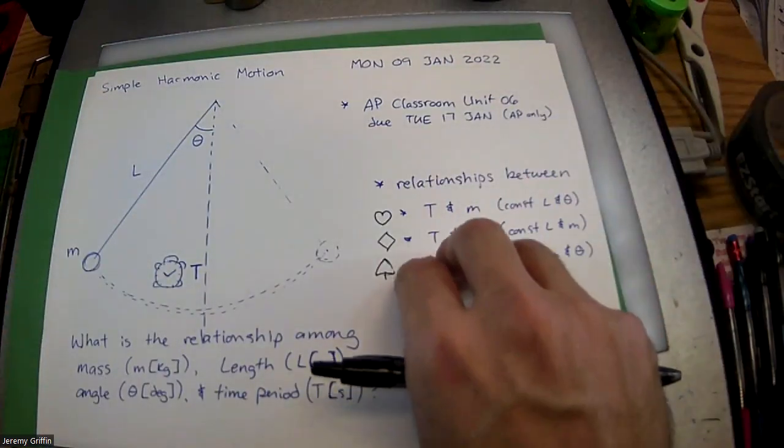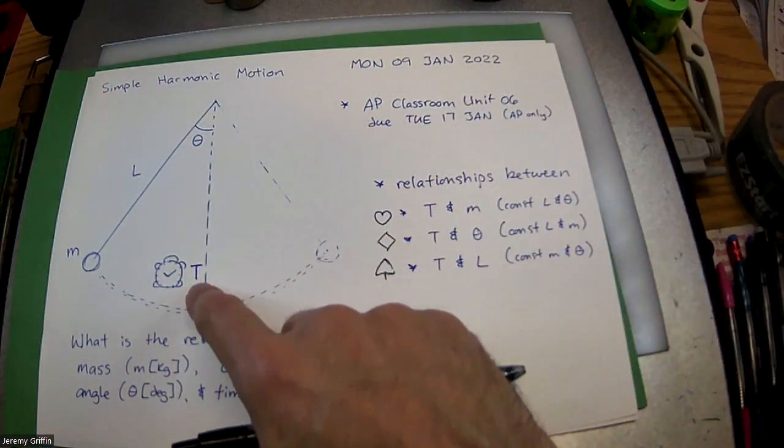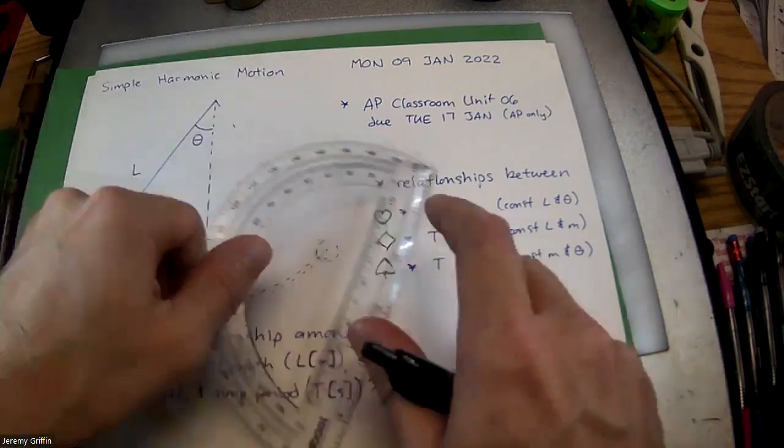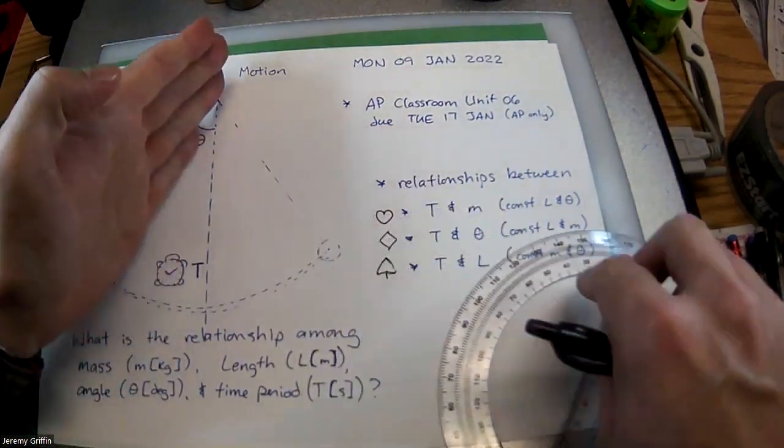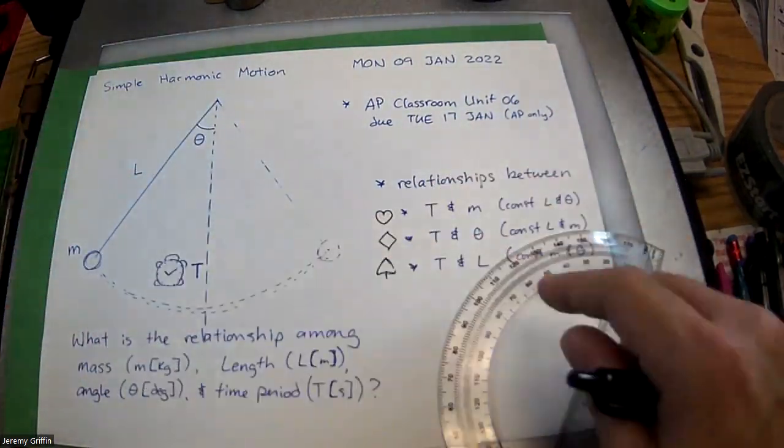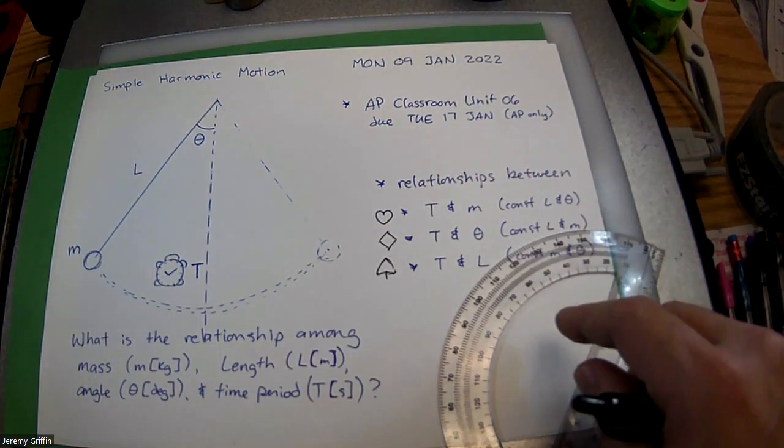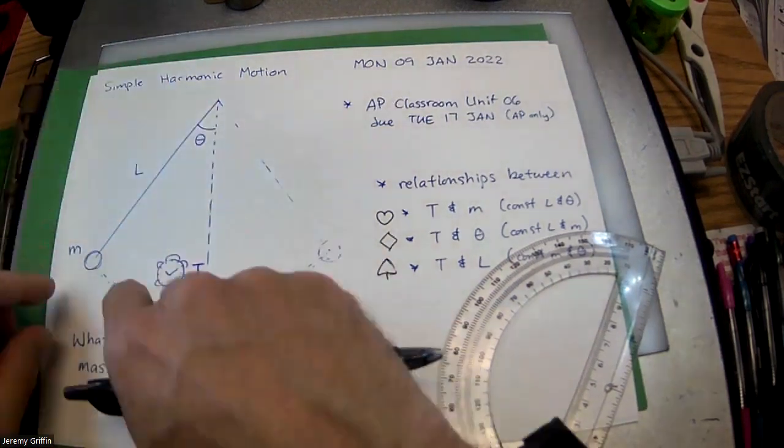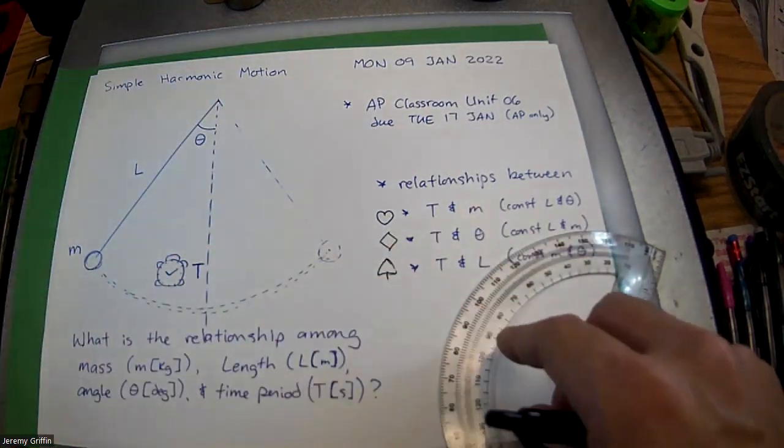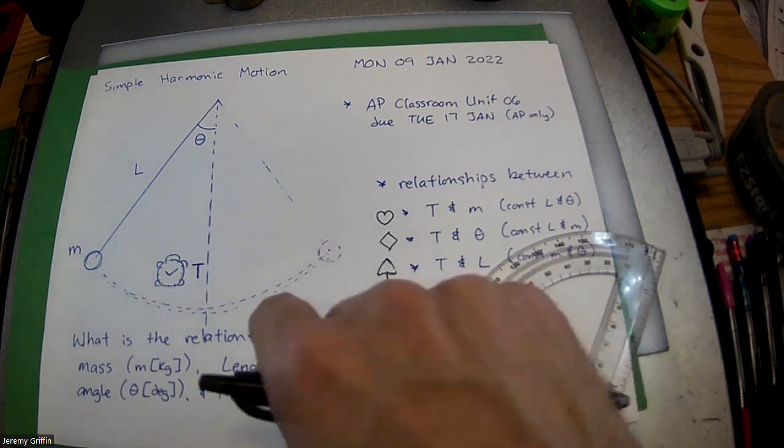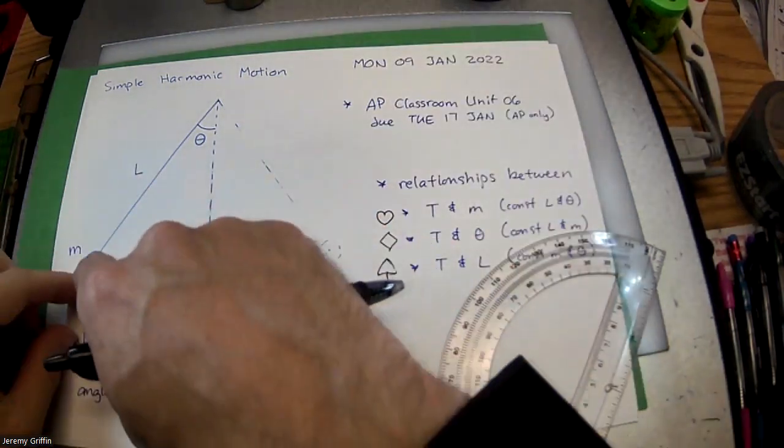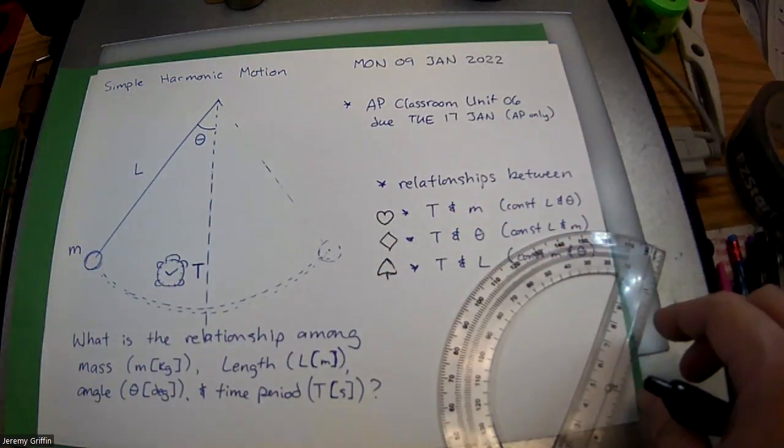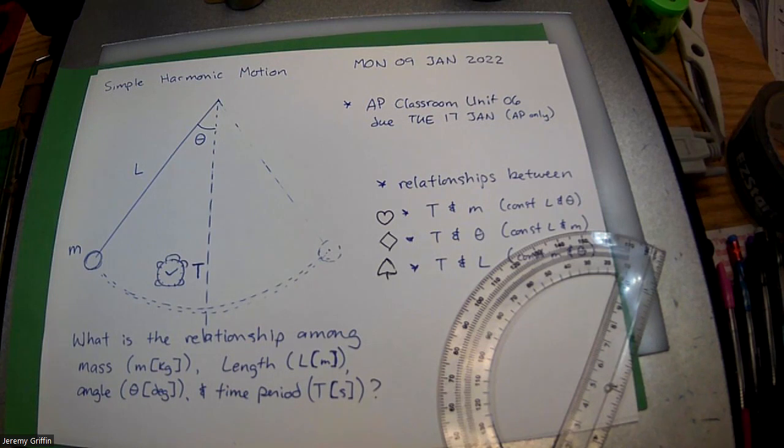Let's do basically same three hypotheses. What does that do to the time period? How many of you guys think that as you increase this angle, it's going to take more time to swing back and forth? Who thinks if you increase this angle, it'll actually take less time, swing back and forth faster? And who says no relationship - as you increase this angle, it's going to take the same time? That's got some votes too.